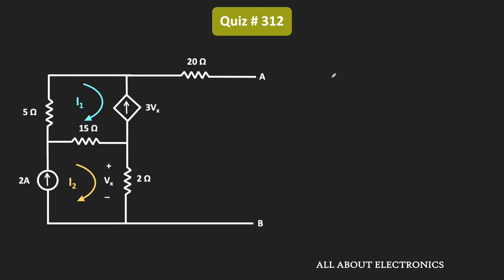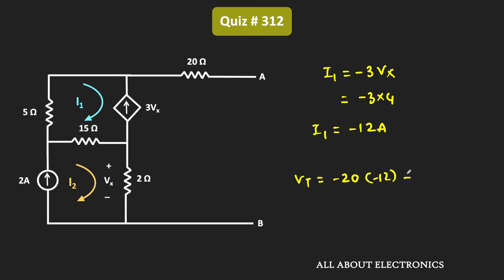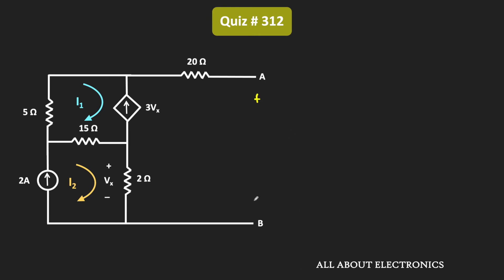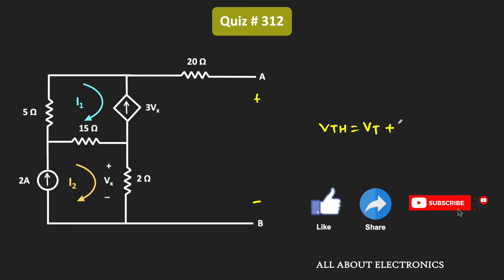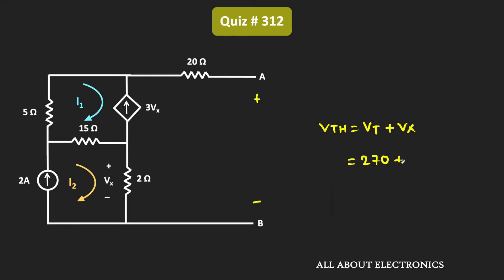Current I1 is equal to minus 3 times Vx, that is minus 3 times 4V, so I1 equals minus 12A. Therefore, voltage Vt equals minus 20 times I1, that is minus 20 times minus 12A, plus 15 times I2, which equals 270V. And therefore, Vth equals Vt plus Vx, that is 270V plus 4V, meaning the Thevenin's equivalent voltage seen across these two terminals is equal to 274V.